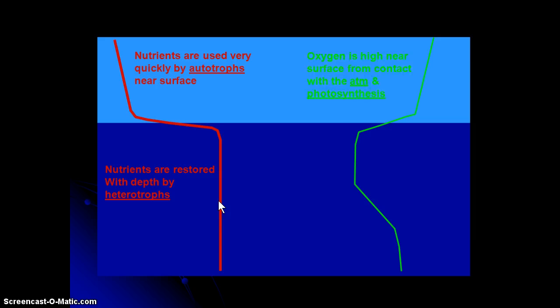So what about the oxygen? Well, oxygen is very high. When nutrients are low in the surface, oxygen is very high. And why is that? It's highest at the surface because oxygen can diffuse in and out of the surface when it's close to the atmosphere.